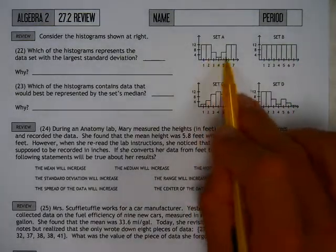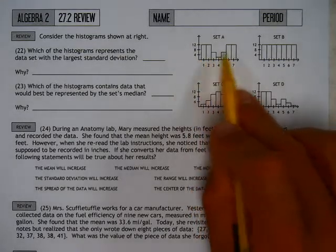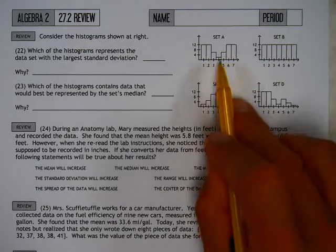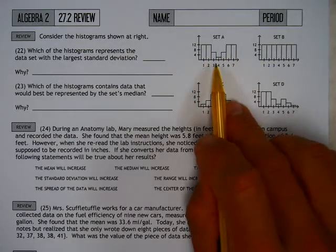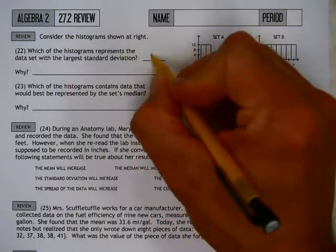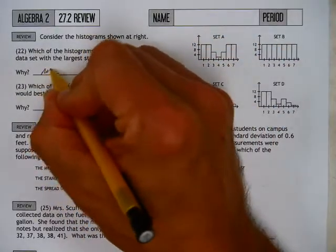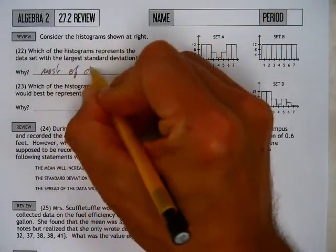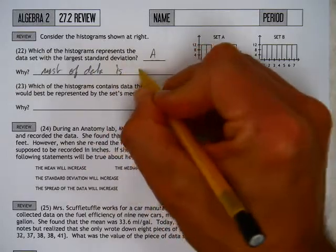is symmetric. However, the majority of the data is far away; there's very little data that actually is represented on the inside. This is going to be the one with the greatest standard deviation. Okay, so Set A, because most of the data is far